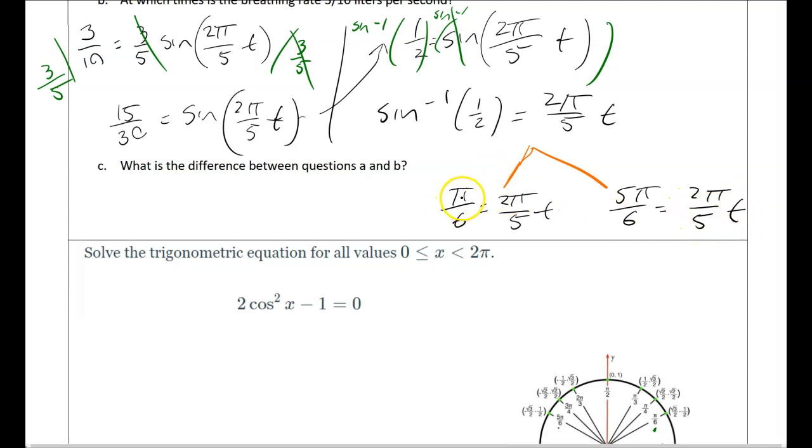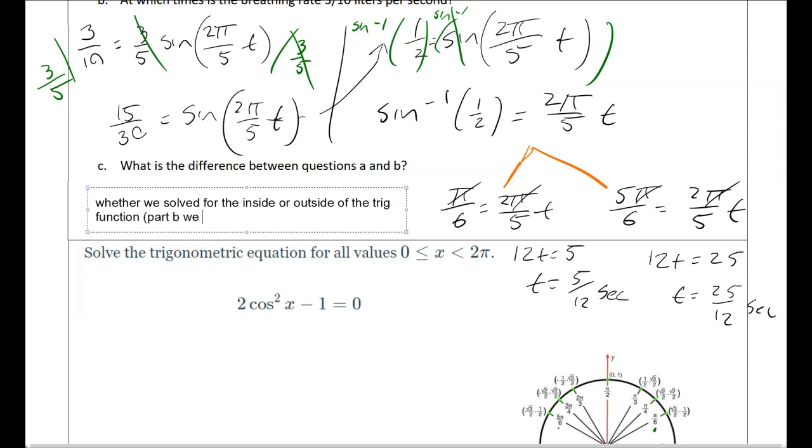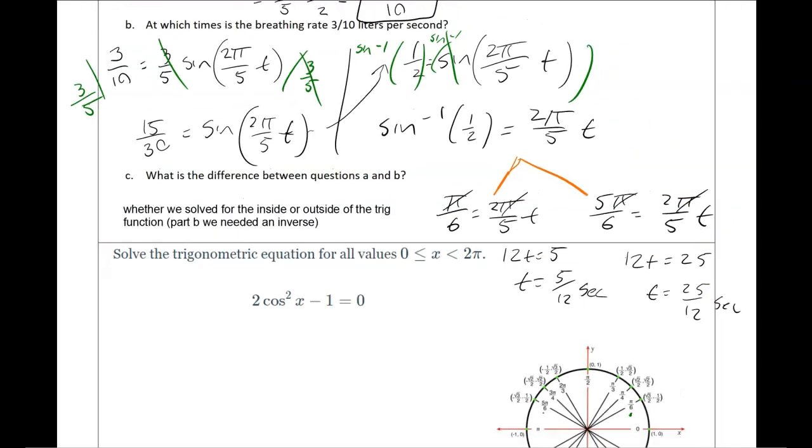In both cases, I can cancel out and then cross multiply. So pi's can cancel on both sides and I get 12 t equals 5 and I get 12 t equals 25. So t equals 5 over 12 seconds and t equals 25 over 12 seconds. So the difference between the two is whether we're solving for the inside or the outside of the trig function. And in part b, we need an inverse.